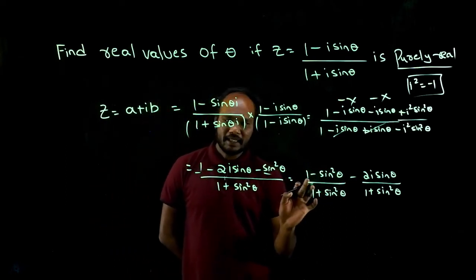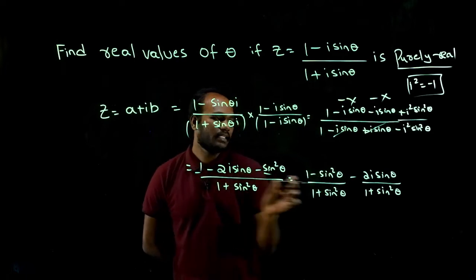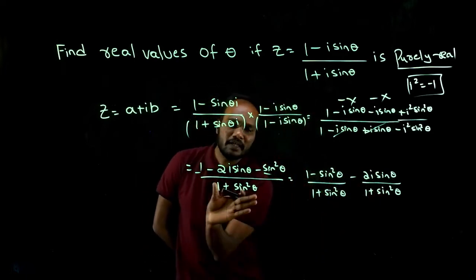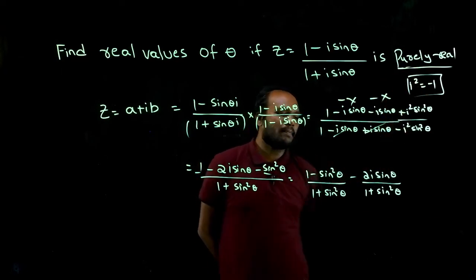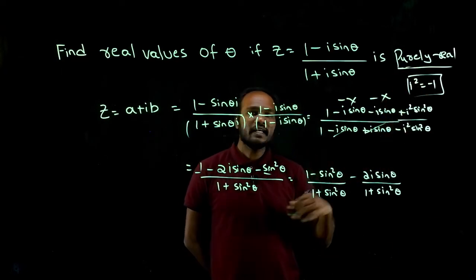I took one minus sine square theta one side, minus this number is there. I have taken here in the denominator just as a split. What is given? Purely real. Purely real means, if I write Z equal to three, this is purely real.